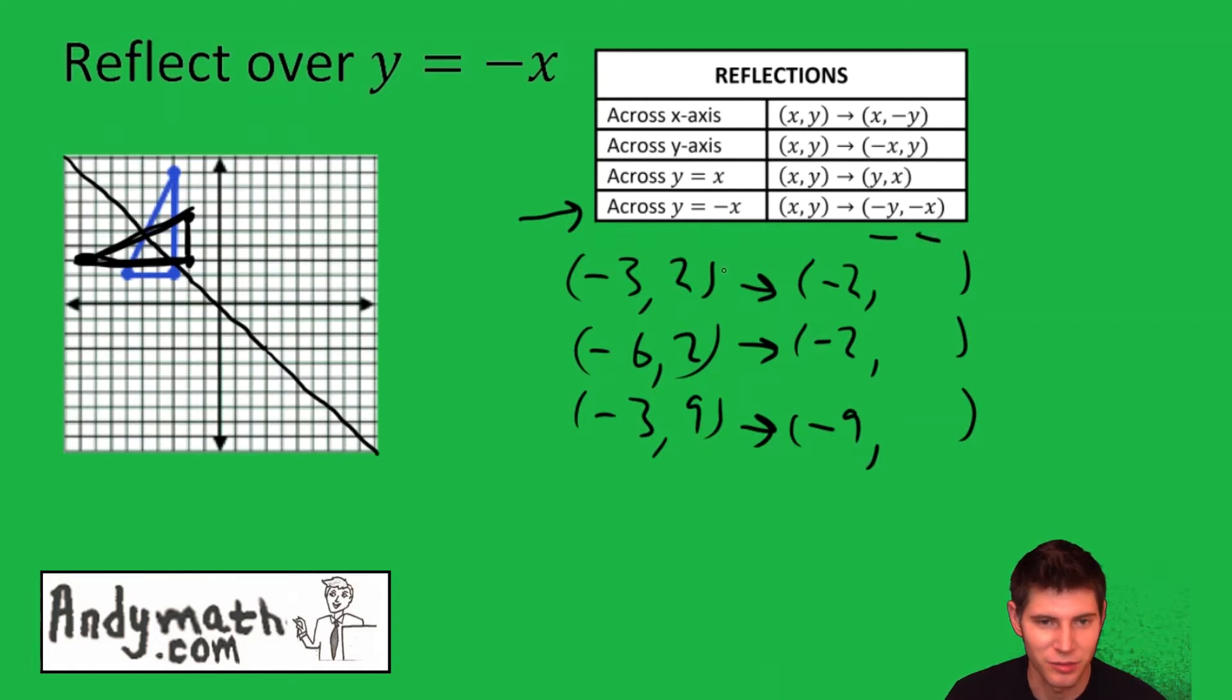In the second slot we're going to put the x's from the first one and make them the opposite. So three, six, three.